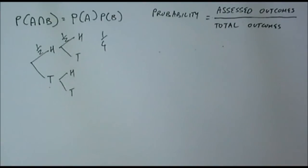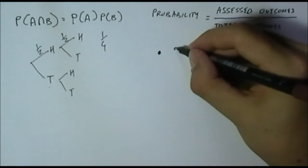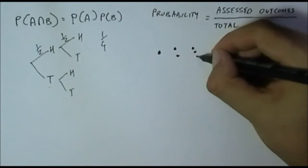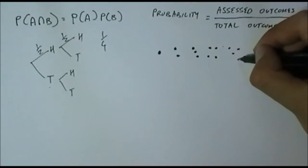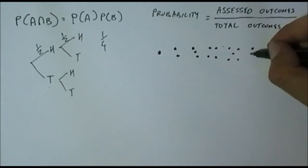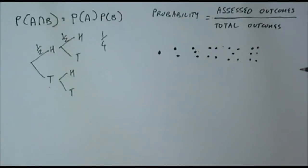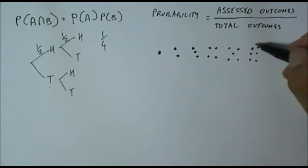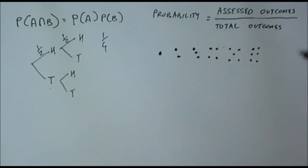To illustrate it again, what is the probability of rolling a six when we roll a die? When we roll a die, we might have a one, two, three, four, five, or six. So our total outcomes when we roll a die is six. The assessed outcomes — we specifically want to see what is the chance of rolling a six — there's only one six. So assessed outcomes will be one, total outcomes are six, that's one out of six.